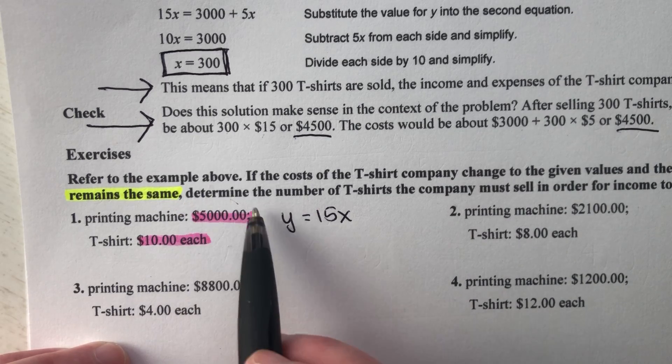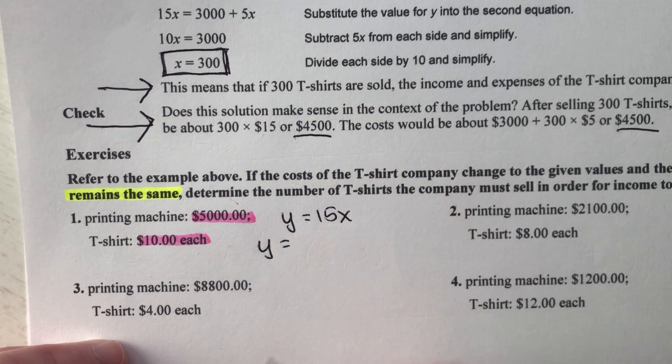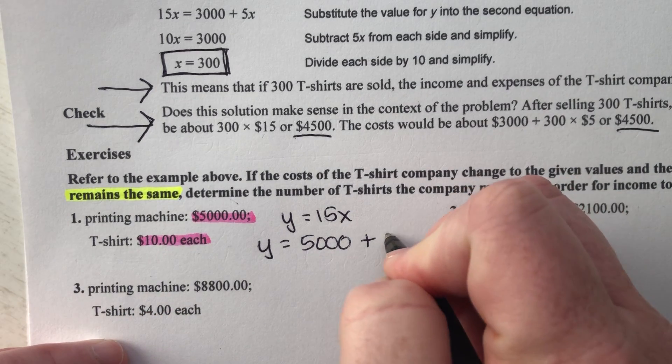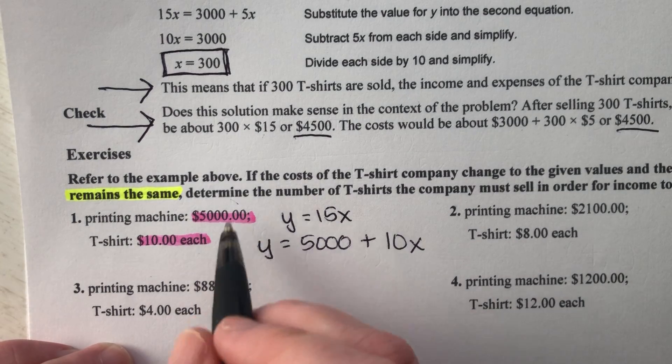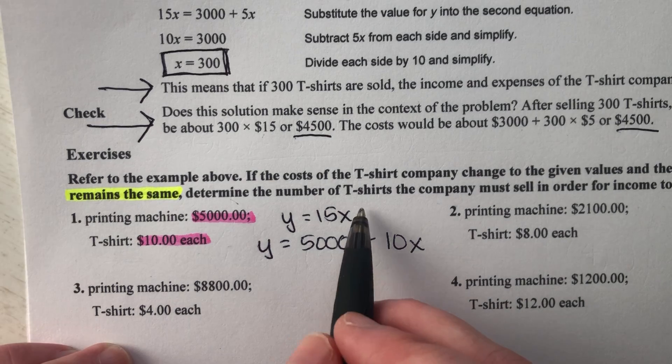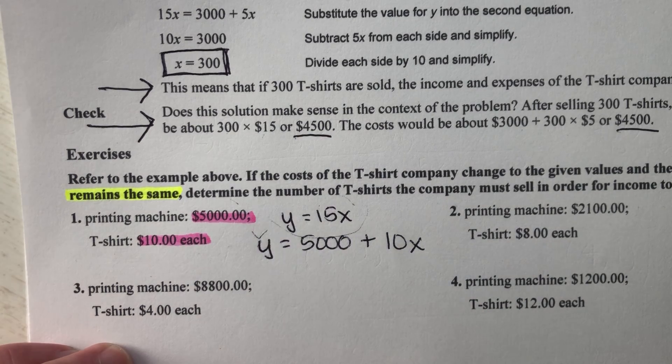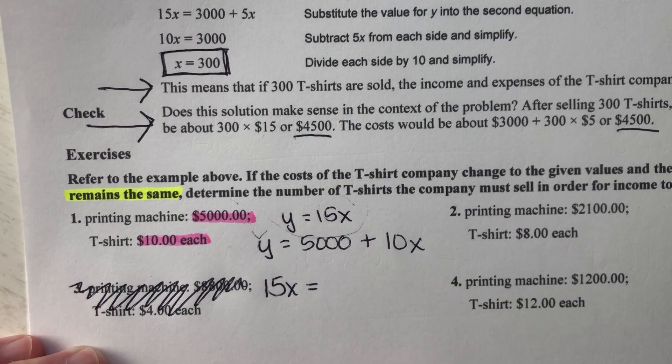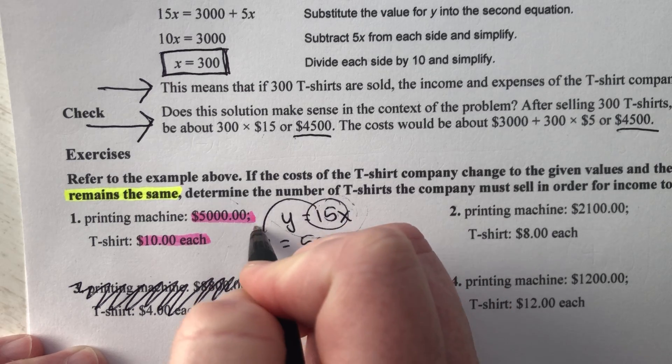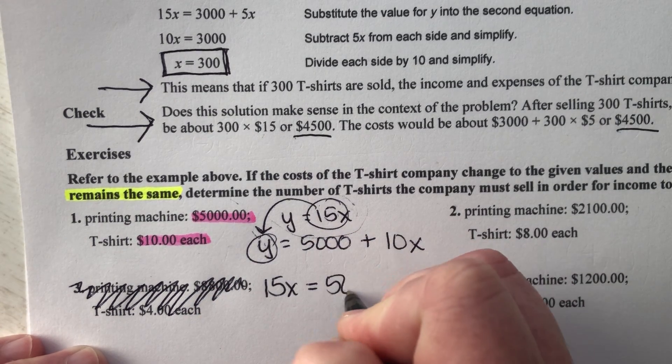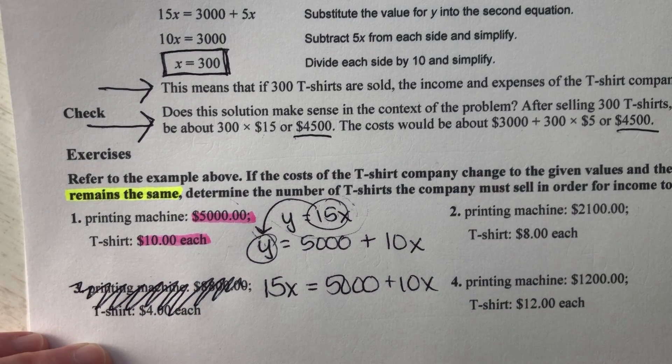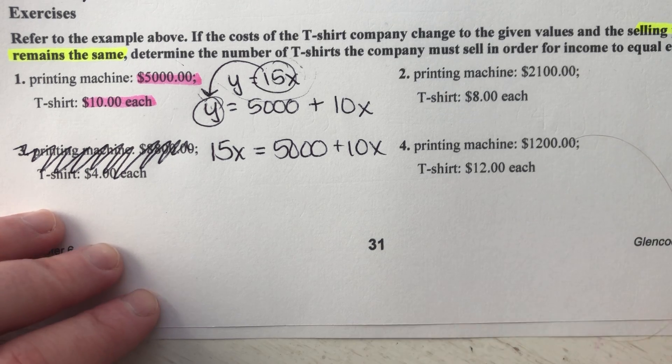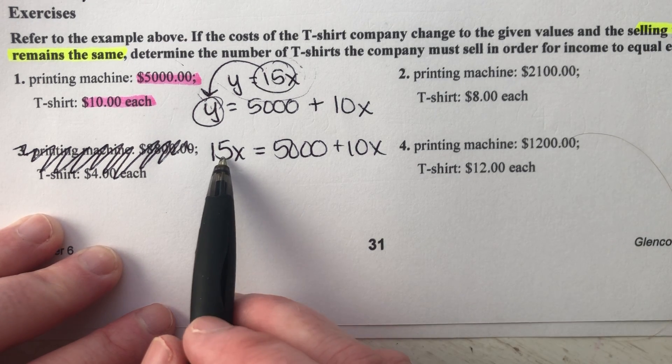So our income equation is still Y equals 15X because the cost of the shirt doesn't change. It remains the same. So you're selling it for 15, but the amount you spent changes. So now the total amount we spend is $5,000 for the machine plus we're going to have to buy our shirts for $10 each instead of $5. So here's our new system of equations. I'm still going to solve it the same way. I'm going to use this top guy as my tool. I'm going to plug this in place of this Y and I'm going to solve. 15X equals this 15X. I'm putting it in place of this Y.